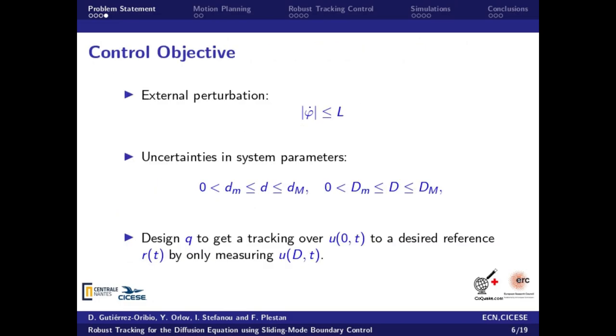The objective in this work is to design the control input Q in order to perform tracking over the state at x equal to 0 to a desired reference r. Such control design must be done by only measuring the state at x equal to D.